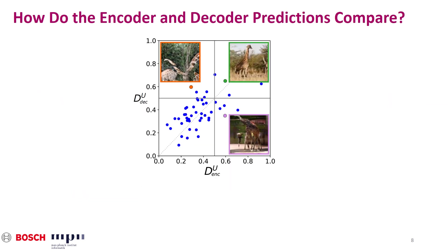To address the question of how much encoder and decoder disagree, we plot the encoder and decoder predictions for a training batch of generated images. On the x-axis, you see the encoder predictions, which range between 0 for completely fake and 1 for completely real. Similarly, the y-axis shows the average per-pixel prediction of the decoder. Every blue point corresponds to an image in the batch. As you can see, the encoder and decoder have a fair amount of disagreement.